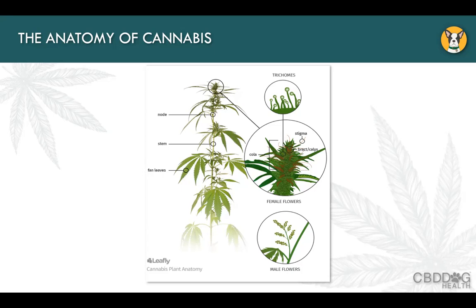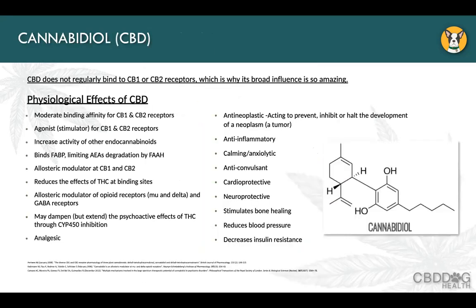CBD Dog Health uses only the flowers, essentially making an essential oil from the oils on the flower itself through extraction. Cannabidiol doesn't fully bind to a receptor — it bonds moderately, meaning it partially covers the CB1 and CB2 receptors. What that ends up doing is stimulating or increasing the activity of our endocannabinoids already in the body, helping to prevent degradation of compounds we want to stay active. It can also reduce the effects of THC at binding sites.